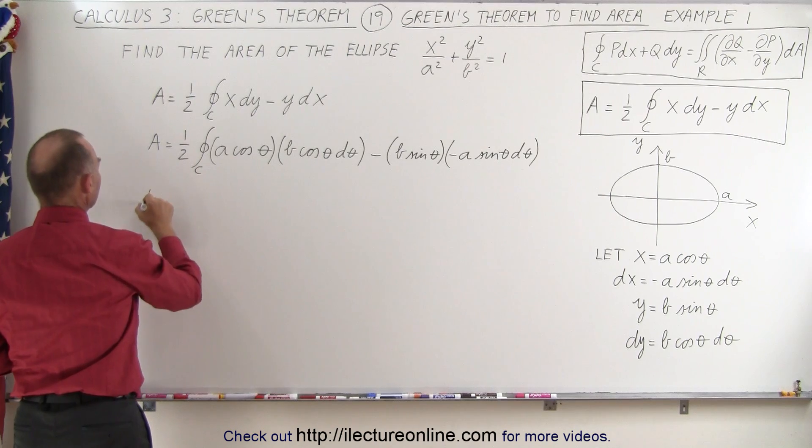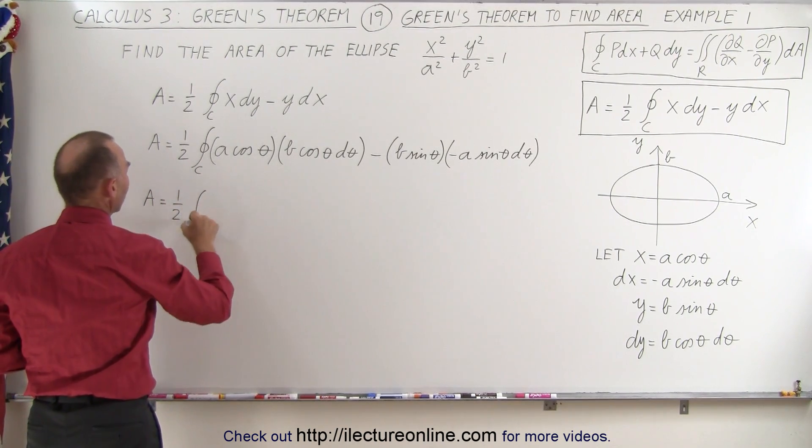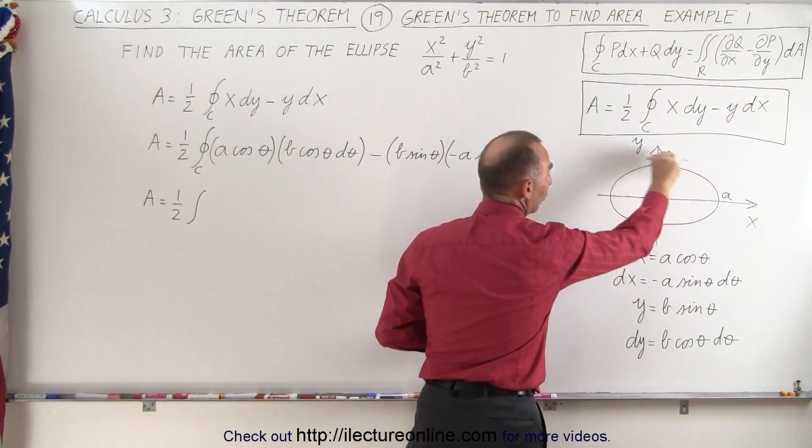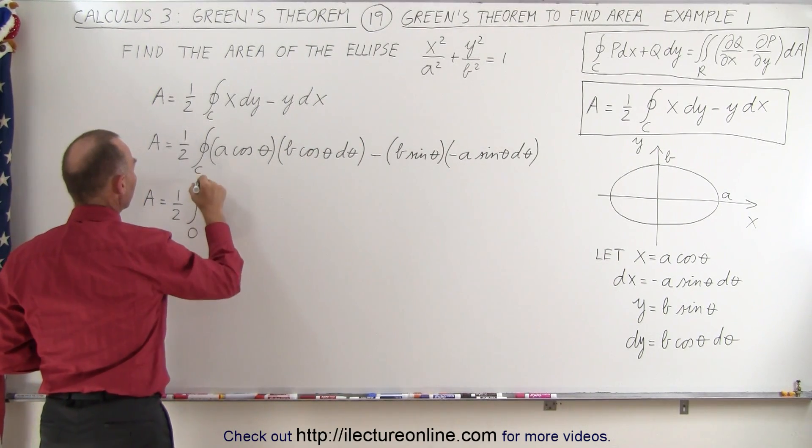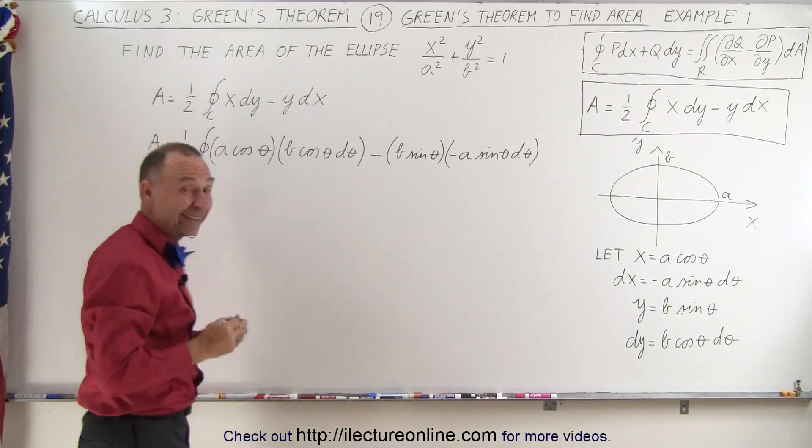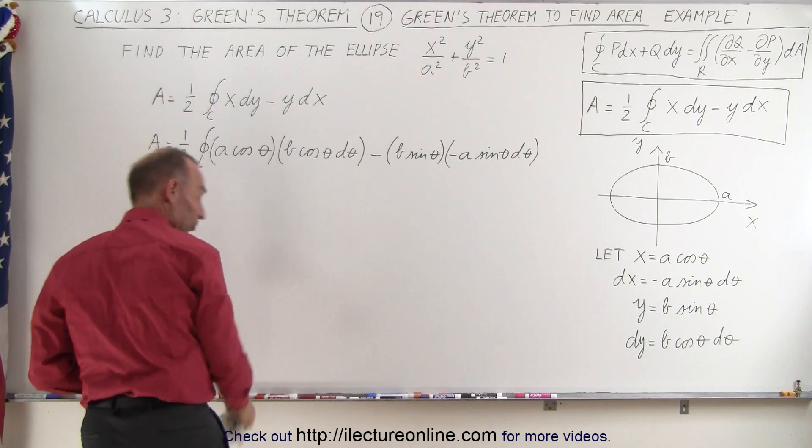So this will now look like area equals one-half times the integral. Now we're going to integrate all the way around the ellipse, so we're going to start from zero all the way to two pi, since we now have the angle as our variable. So from zero to two pi, and oh, I forgot to take out the a times b. Let me do that. That was the whole objective here.